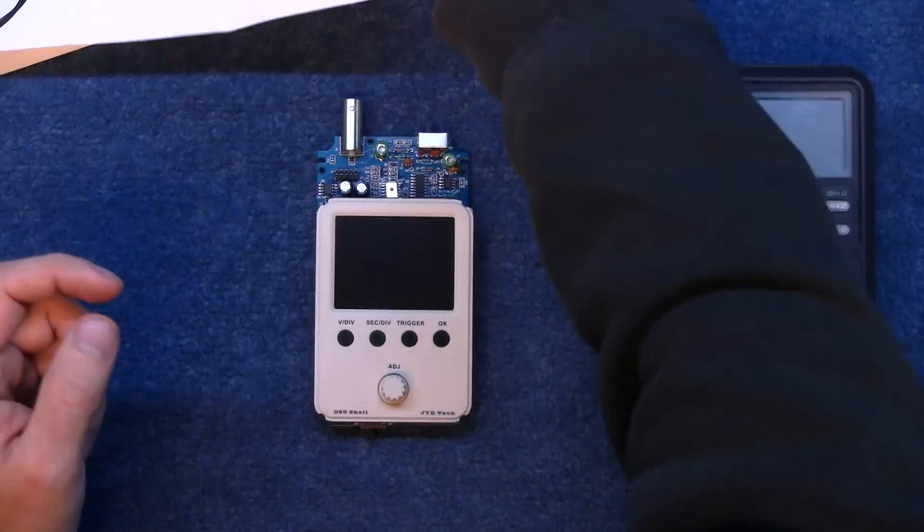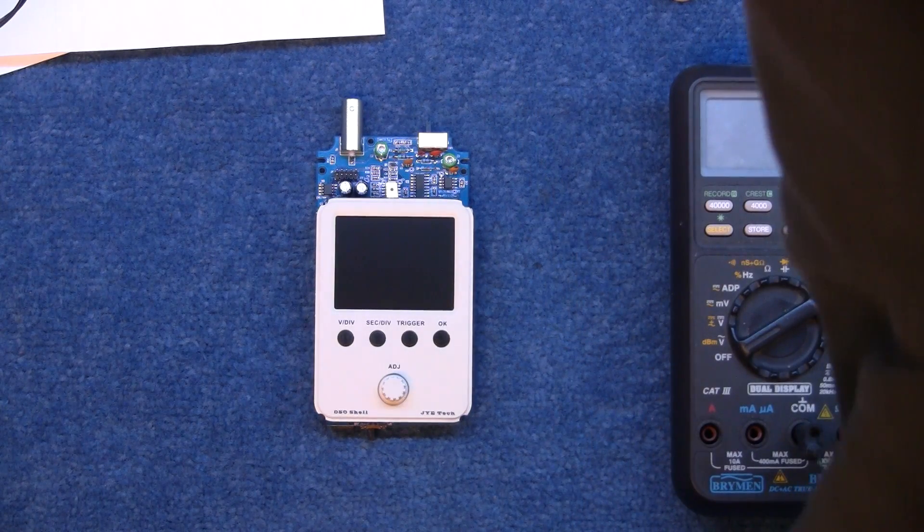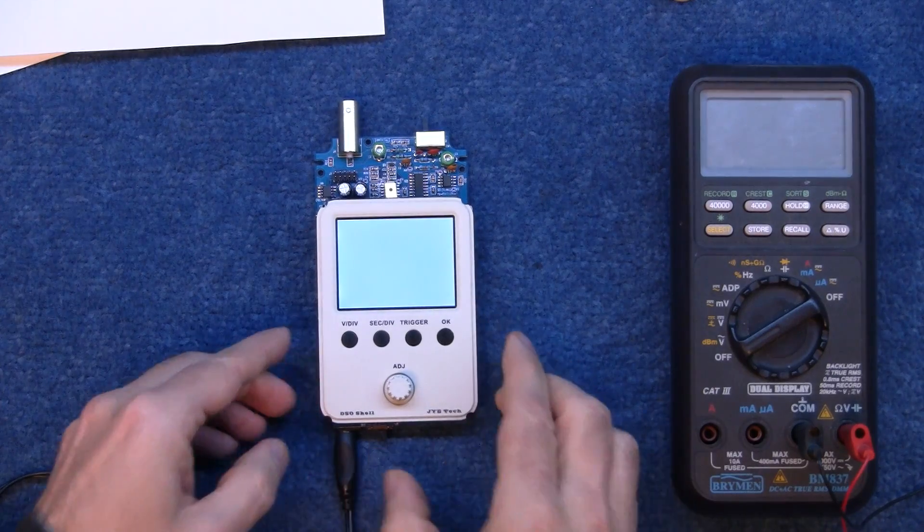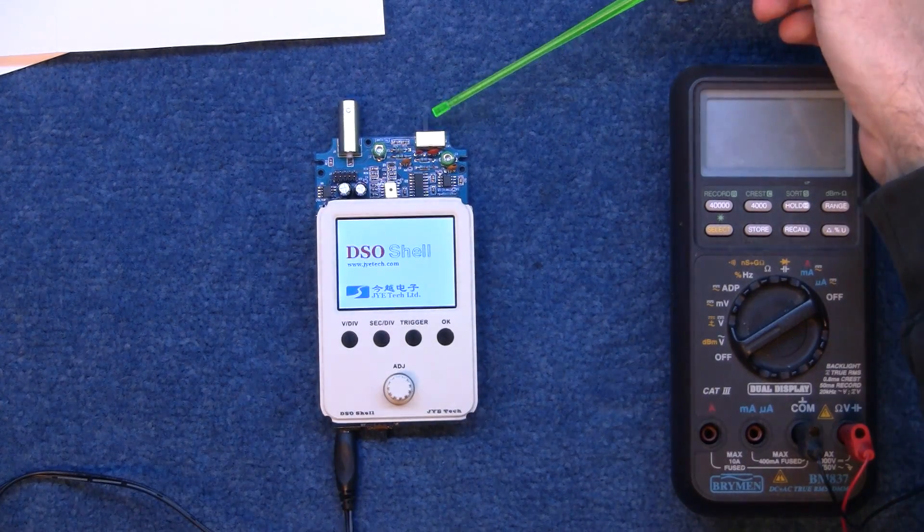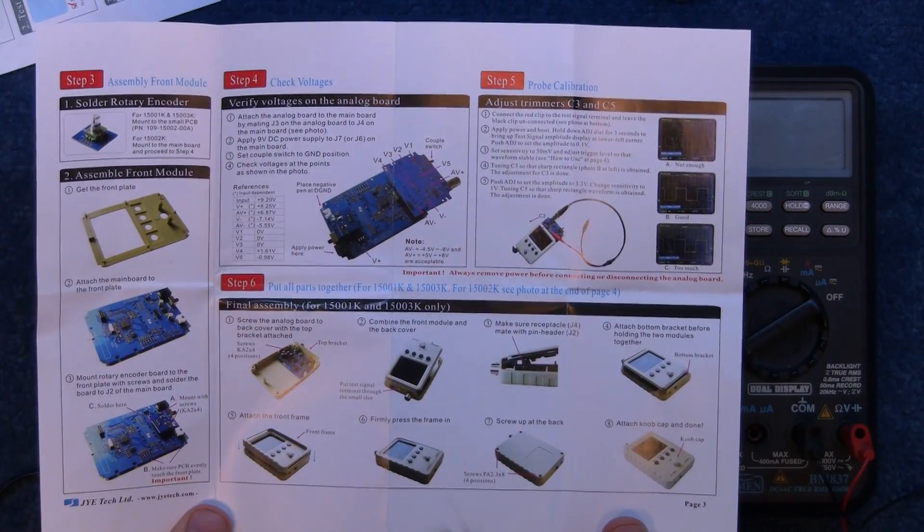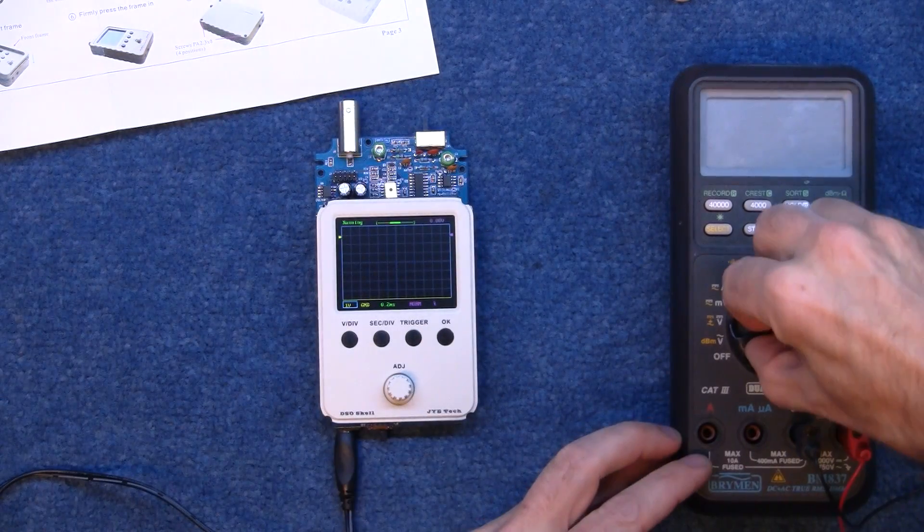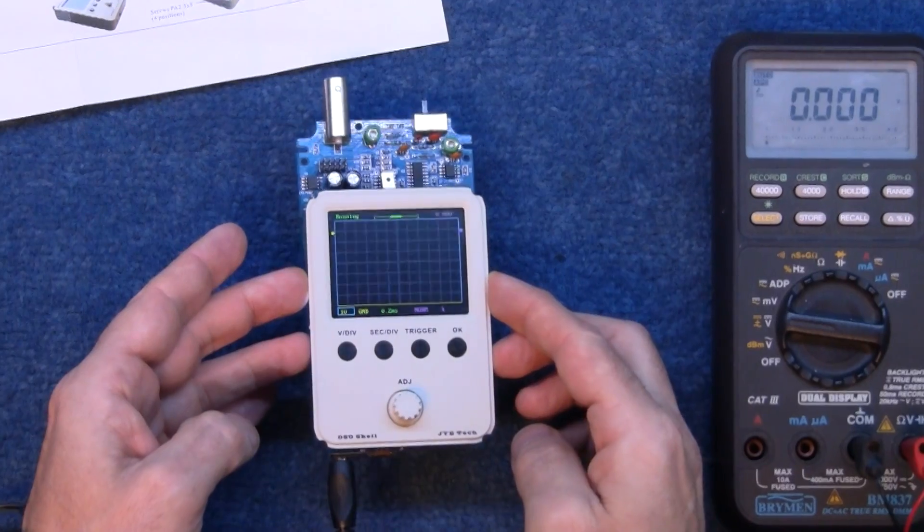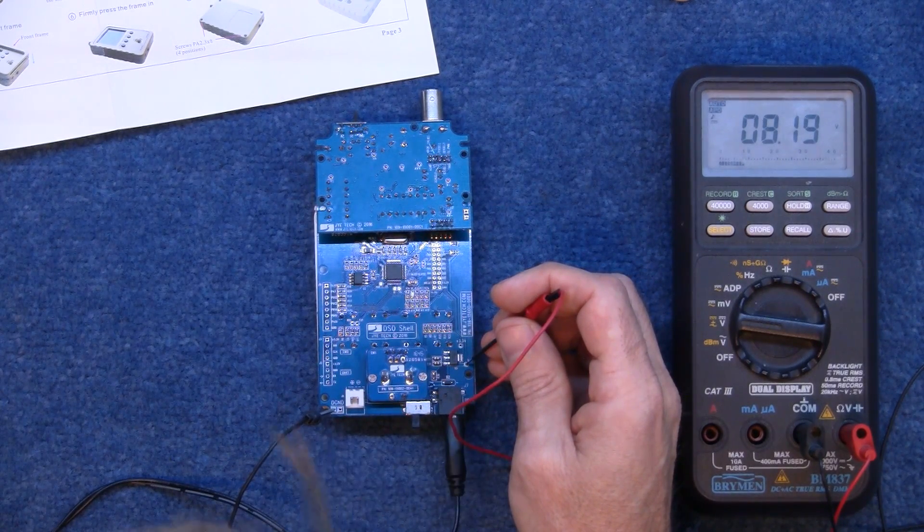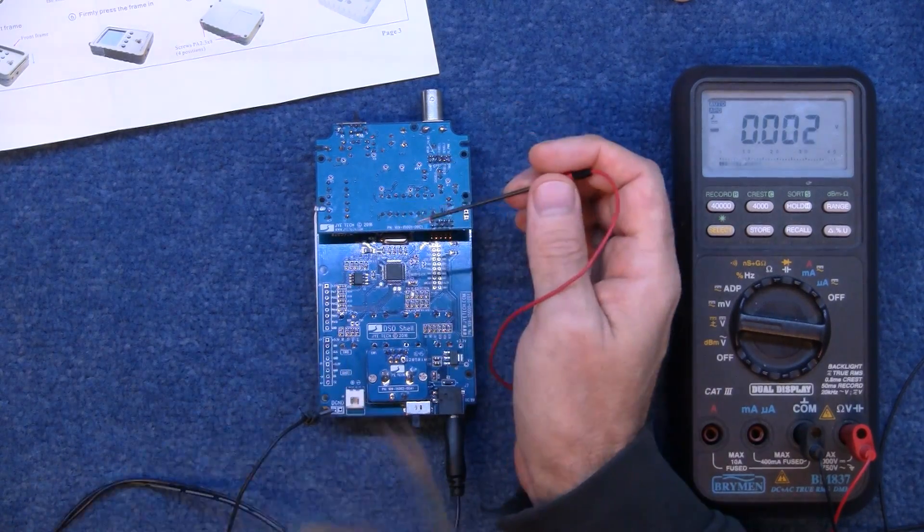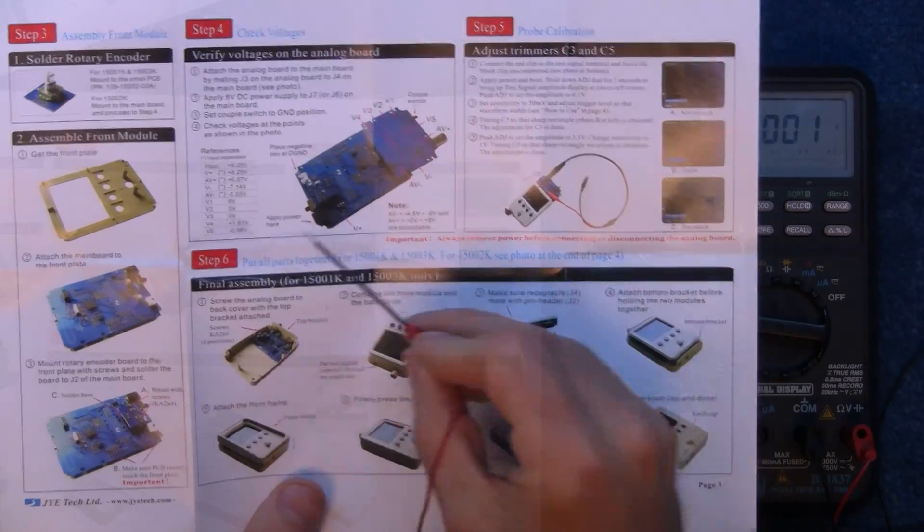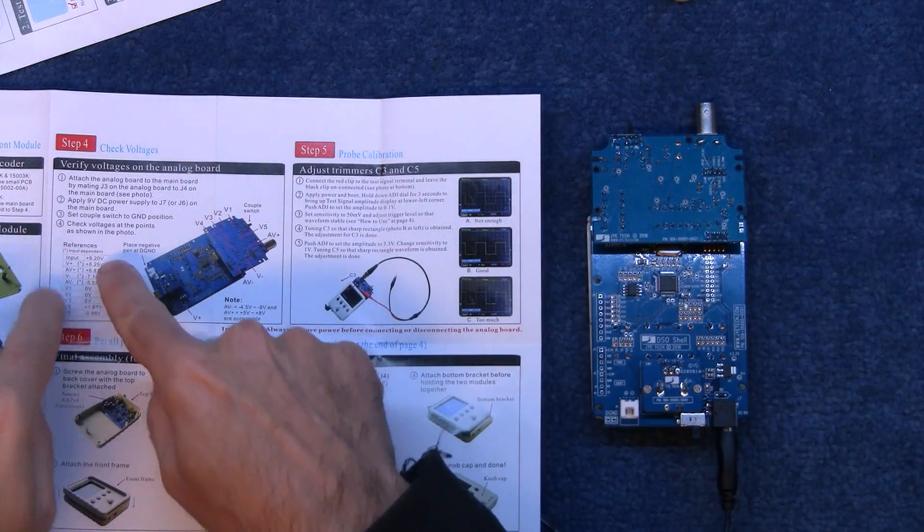Apply nine volt power supply. Nine volts. And turn it on I guess. Oh and make sure that the coupling switch is in the ground position which it is on this one. Right. Next. Check the voltages at the points as shown in the photo. Right I'll just do a quick check of voltages. That screen looks really nice actually. It's very sharp. So I've got nine volts going in and then this V plus 8.19. That's fine. And then we go and follow all of these points on here and check the voltages down in the chart here. So step four is fine. All the voltages are within the tolerance in the chart there.